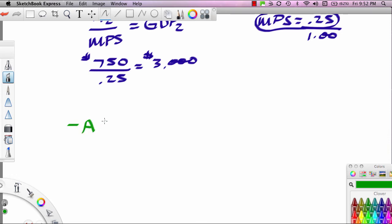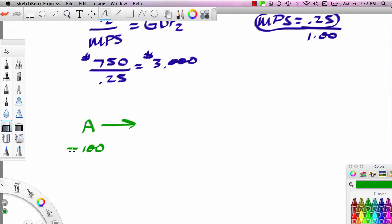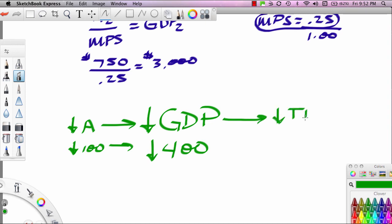Here's what happens. The drop in A was a drop of $100. That led to a very large drop in GDP of $400. Notice this is a 1 to 4 relationship. But that drop in GDP led to a further drop in spending. Remember, this is a drop in spending here too. A is part of spending. This was caused by the drop in confidence. The initial drop in spending was caused by the drop in confidence. But this later drop in spending is caused by a drop in income.